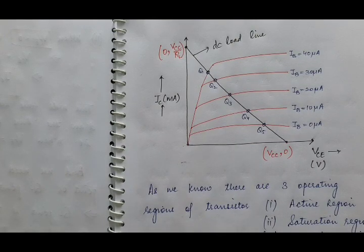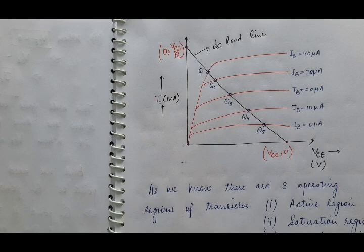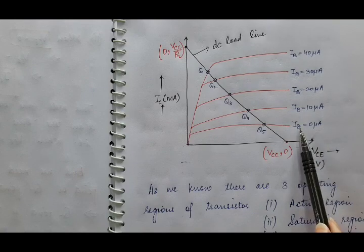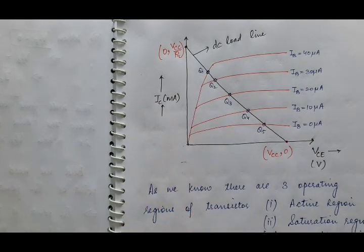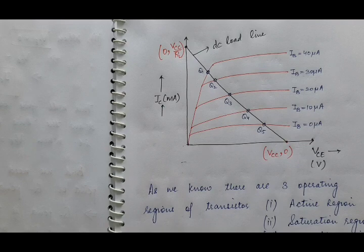Here we have drawn the DC load line and the output characteristics of the common emitter transistor. Because we have to find the proper operating point of the transistor, which is the intersection of the DC load line with the output characteristics. As you can see, there are five points of intersection between the two lines, meaning all these five points are the Q points. But this transistor will not work as an amplifier at all these five Q points.